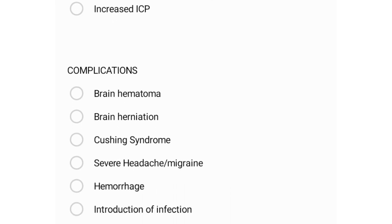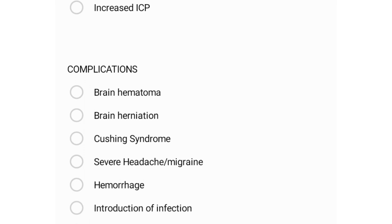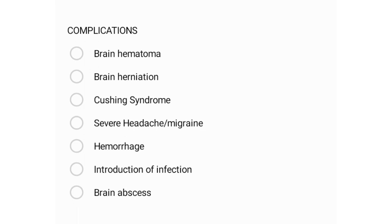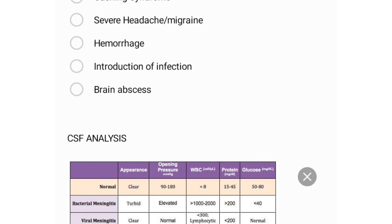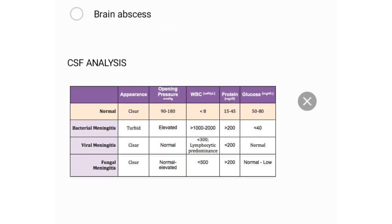Complications include brain herniation, Cushing syndrome, severe headache or post-LP migraine, hemorrhage, introduction of infection, and brain abscess. For CSF analysis, normal results show: clear appearance, opening pressure 90–180 mmH2O, WBC less than 8, protein 15–45 mg/dL, and glucose 50–80 mg/dL.